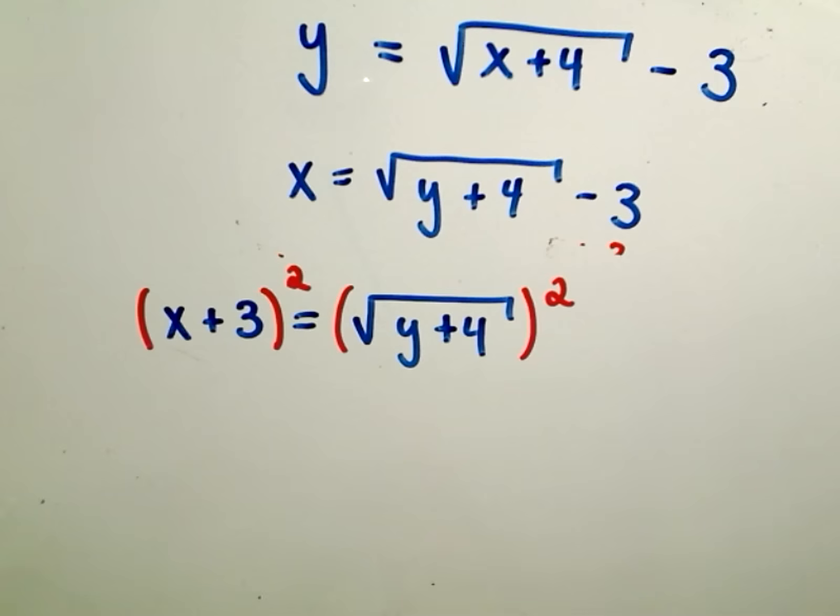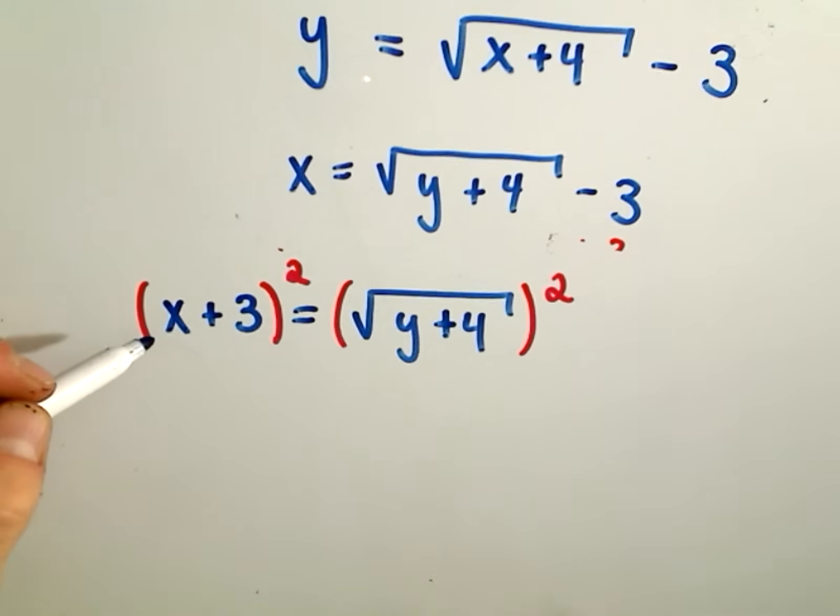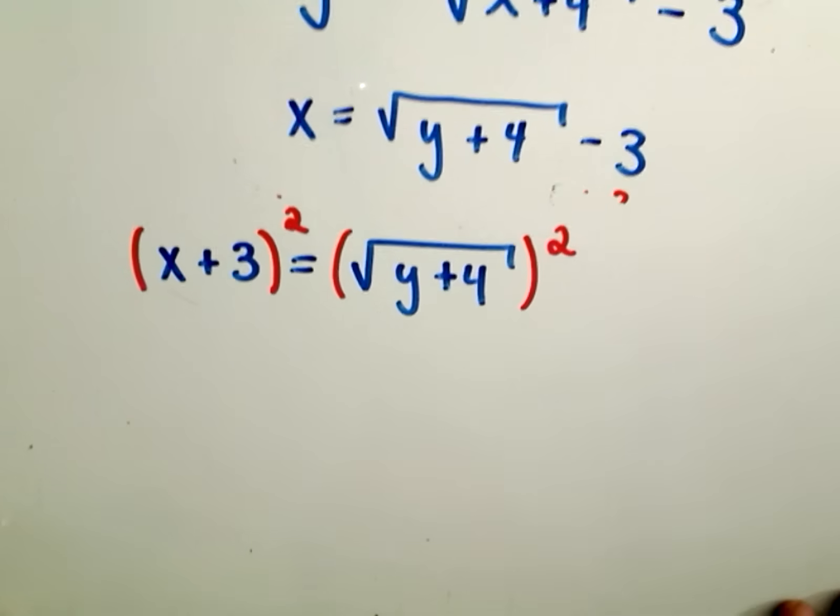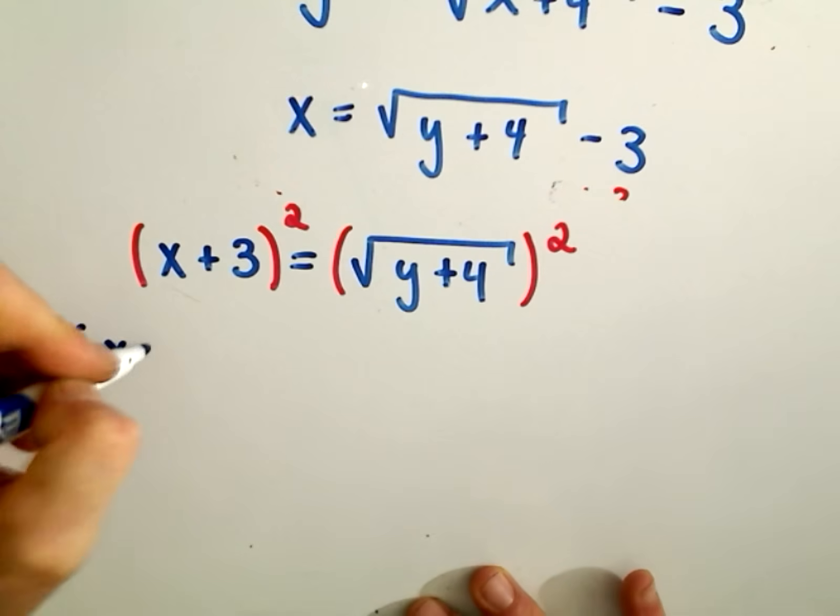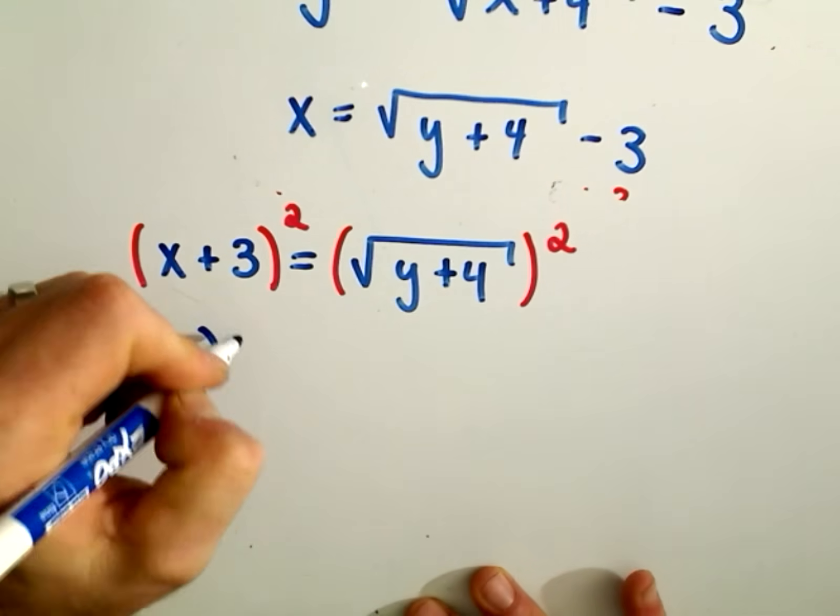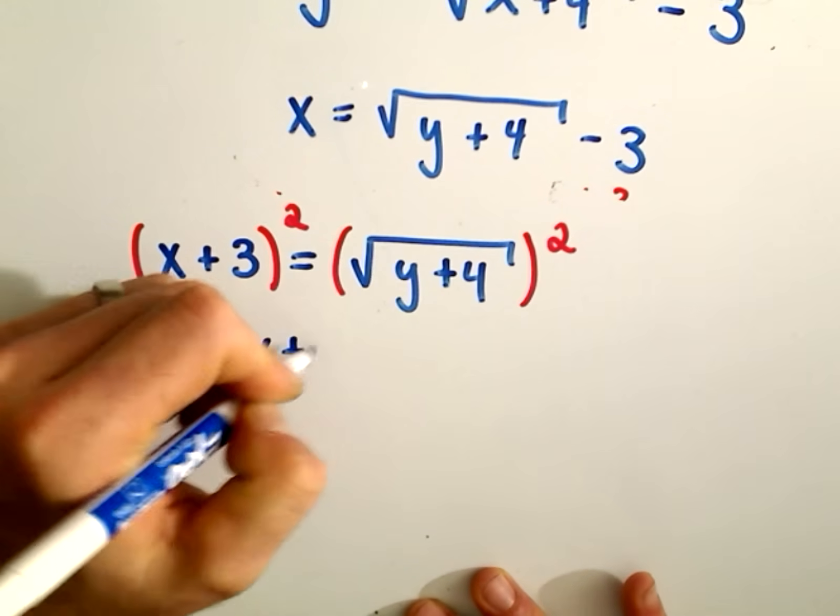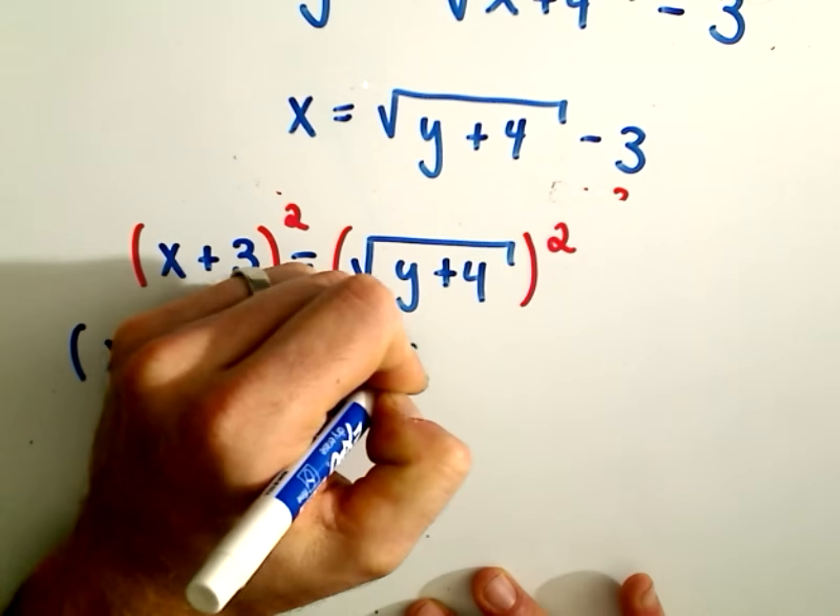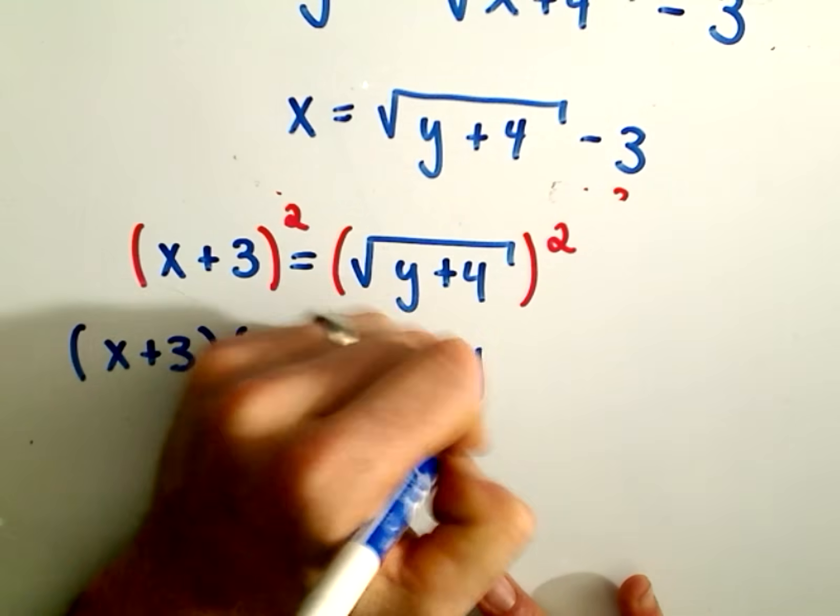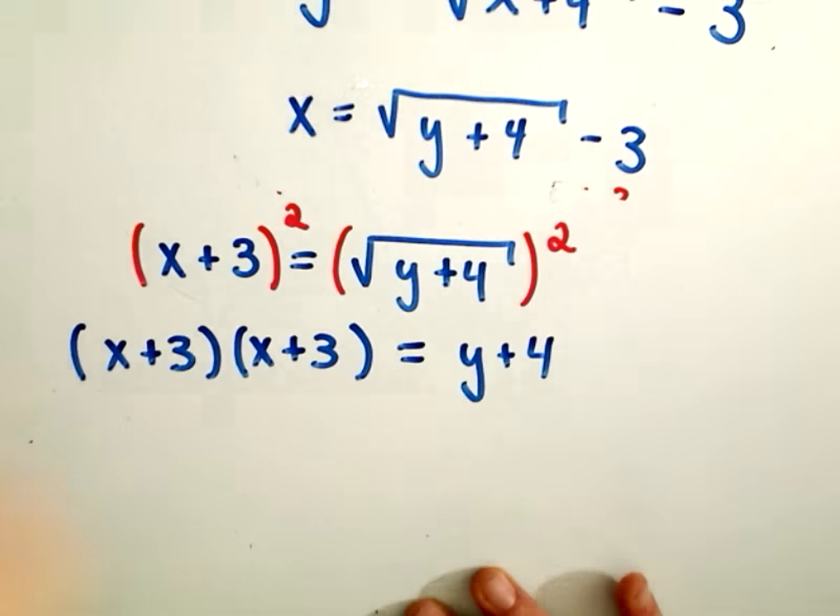I think an easy mistake to make would be to make this x squared plus 9, but that would be very much not correct. Because remember x plus 3 squared, that is simply x plus 3 times x plus 3. So make sure you FOIL this part out. On the right side, we will just get what's underneath the square root, which is y plus 4.